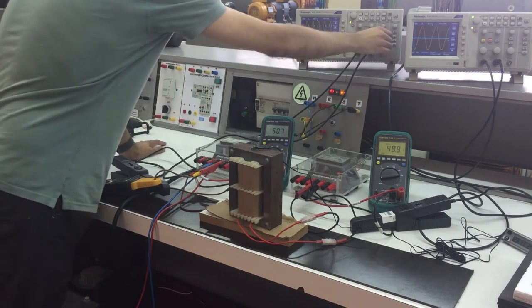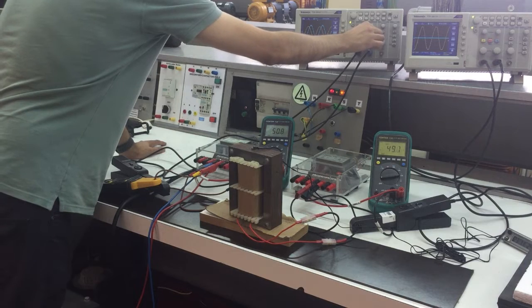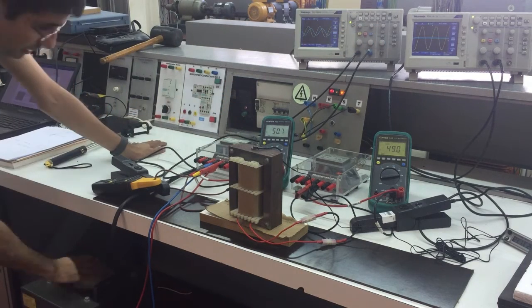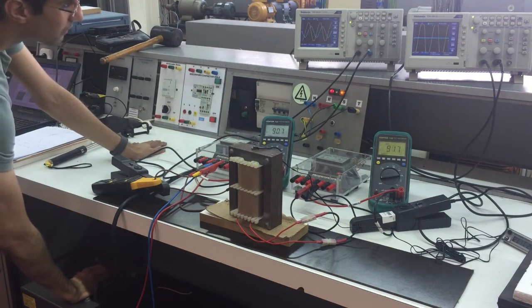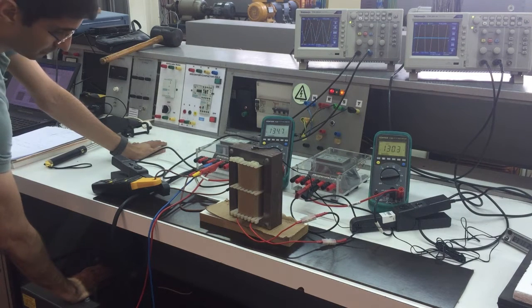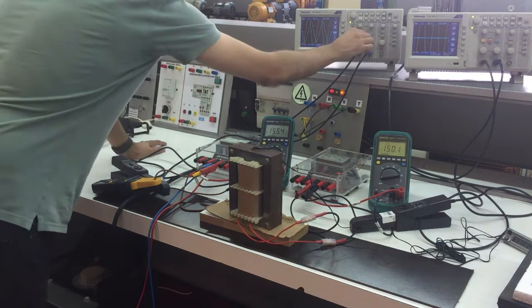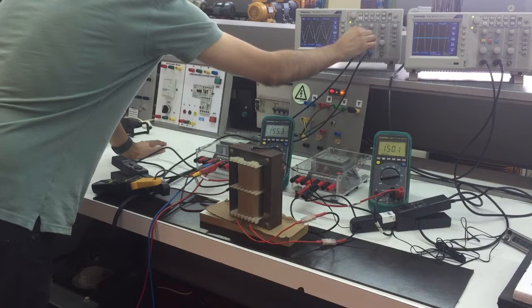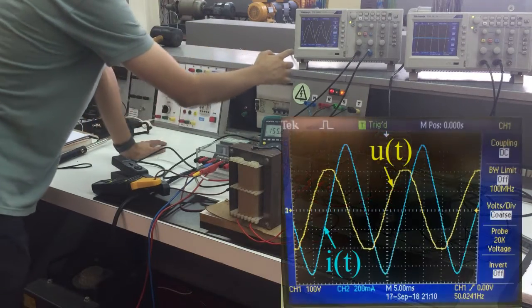Now go back to the voltage and current curves, and increase again the autotransformer until you have 150 volts. See that the current now is more triangular.